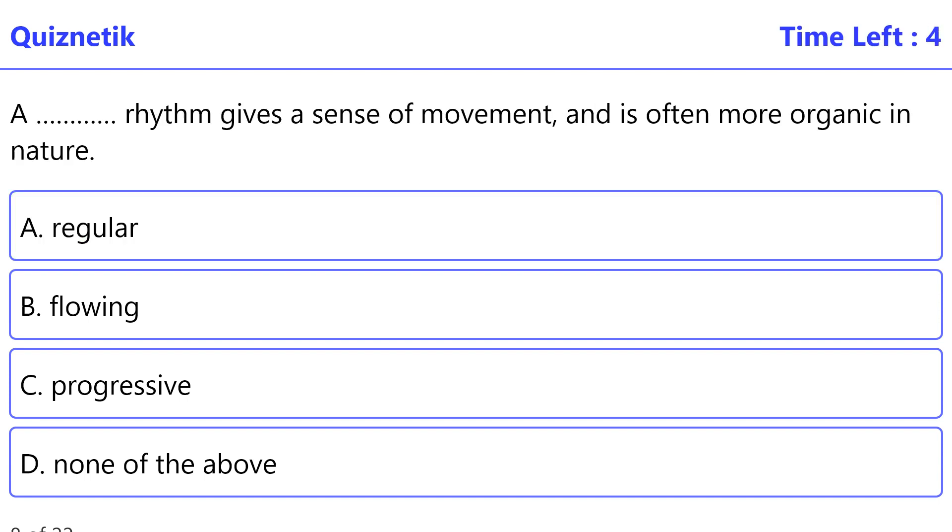Flowing rhythm gives a sense of movement and is often more organic in nature. The correct option is B, flowing.